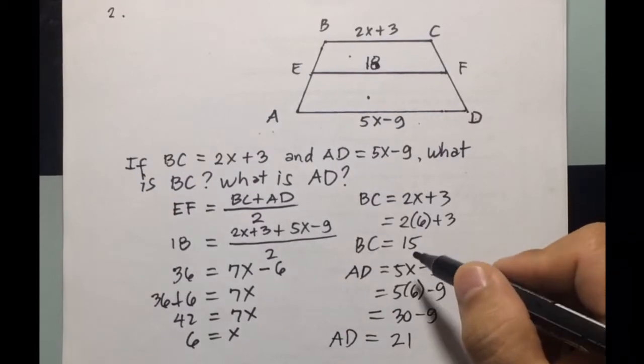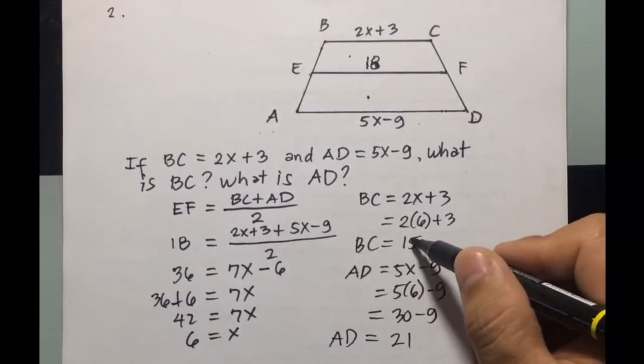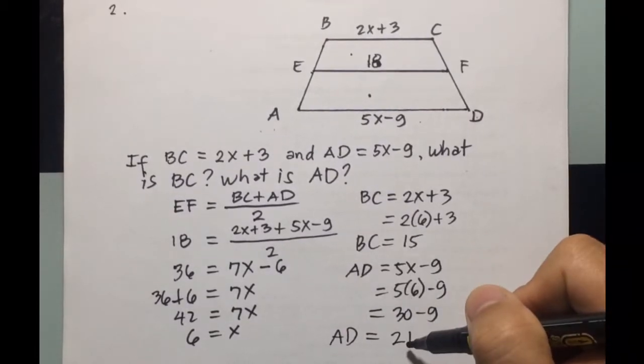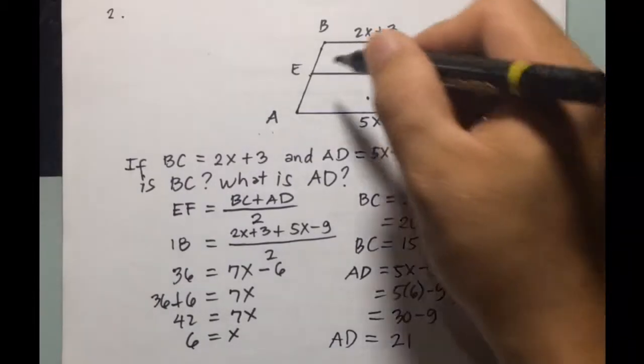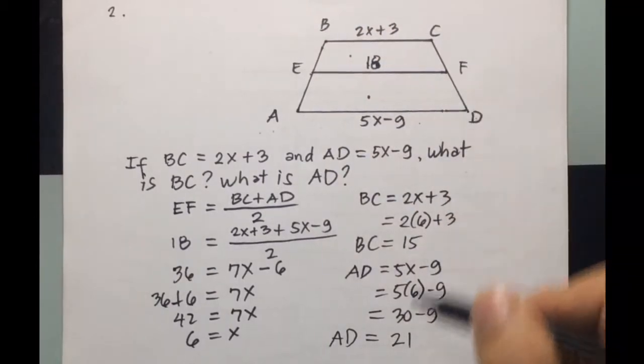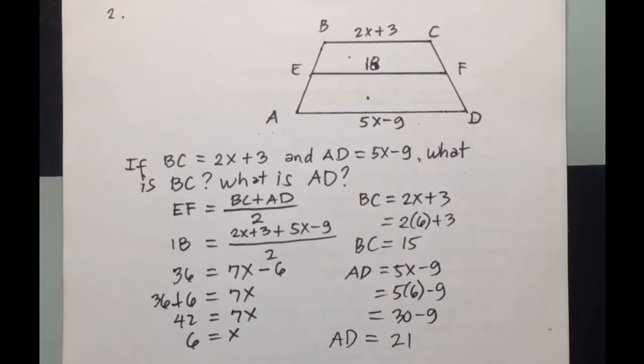Now to check if your answer is correct, you can have 15 plus 21, that will be 36, then divide it by 2, so the answer is 18, so that will be the value of EF, so your answer is correct.